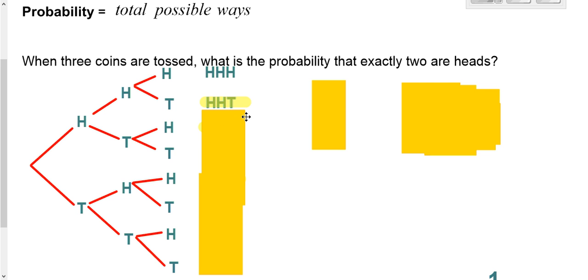By the way, that's what we're looking for. We're looking for two heads. Or we could have this one: a head, a tail, and a head. Well, that one also works for us. Or we could have a head, a tail, and a tail. That one does not work for us.